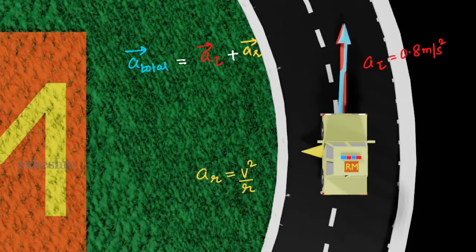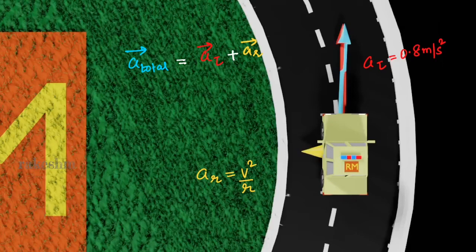Because of the tangential acceleration, the speed of the car goes on increasing. As the speed increases, the radial acceleration also increases — radial acceleration is v² / r. So when speed increases, radial acceleration increases. The total acceleration is given by tangential plus radial. The tangential is constant, but the radial is continuously increasing, so the total acceleration continuously increases.